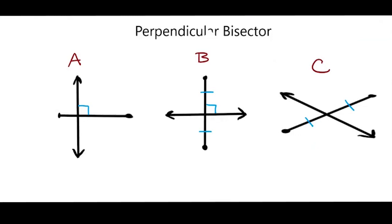Here I have three figures: Figure A, Figure B, and Figure C. I want to find which, if any of these, are a perpendicular bisector.